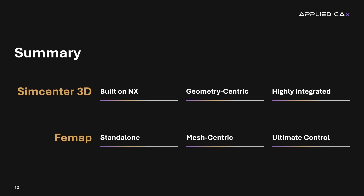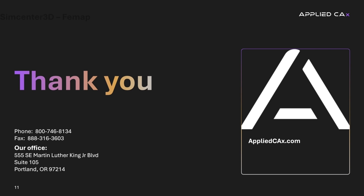So, to sum it up, if you're in need of a broad integrated solution that's geometrically centric, SimCenter 3D may be your top choice. However, if you're looking for a standalone, dedicated FEA tool with mesh-centric capabilities, FEMAP could be a great fit. And with bundled licensing options, it doesn't have to be an either-or situation. Both SimCenter 3D and FEMAP are highly effective tools in their own right, and your choice should be based on your specific needs and project requirements. For a deeper understanding and a hands-on experience with these tools, reach out to our expert team at Applied CAX for a demo or trial.